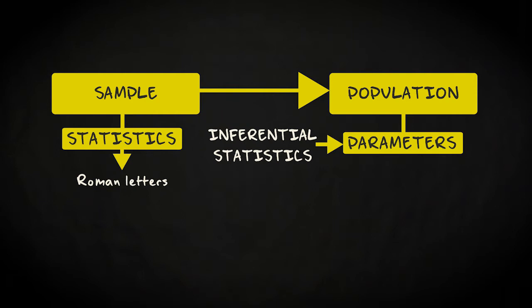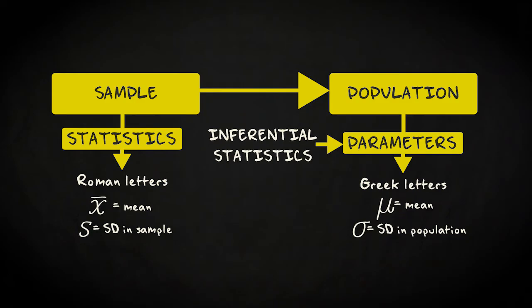Statistics are displayed by Roman letters. For instance, x bar is the mean, and s is the standard deviation in a sample. Parameters, however, are displayed by Greek letters. Mu stands for the mean in a population, and sigma for the standard deviation in a population.